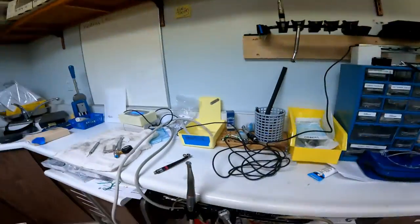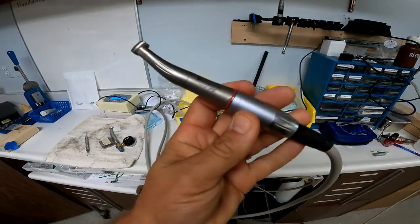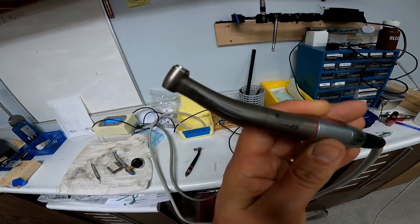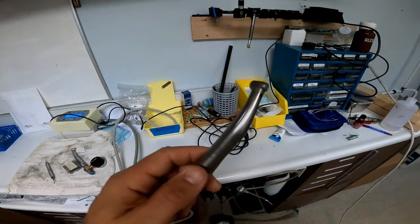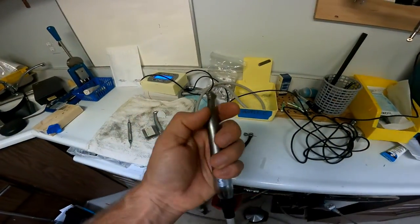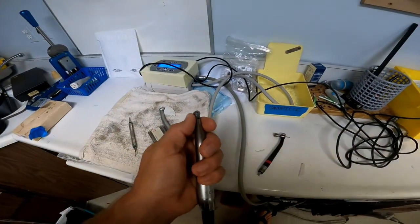Today I'm actually going through some Brassler electric handpieces here, some Forza F5s. These are one to five handpieces and this particular handpiece that I received, I'm going through the basic checks that I do on electric handpieces: temperature checks and performance checks.